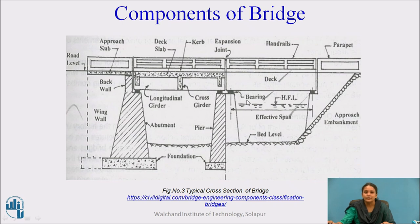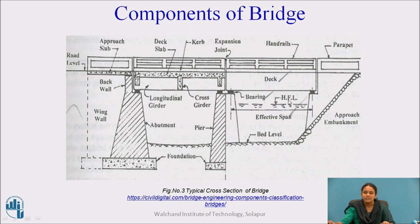Bearings are provided to reduce vibrations due to vehicle traffic and to reduce stresses on the deck slab. The deck slab is the road surface of the bridge. HFL stands for High Flood Level, indicating the maximum level of water that can rise during flood conditions, and is used for precautions in rainy seasons. Longitudinal girders are provided throughout the span, and cross girders are provided throughout the width of the bridge, which is the width of the road pavement constructed over the bridge.